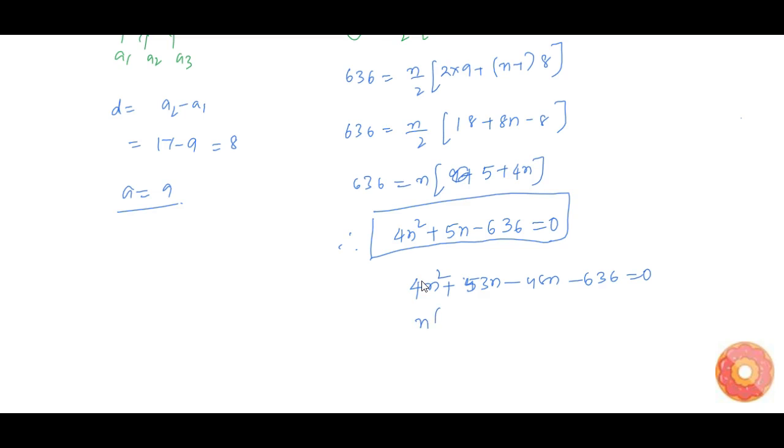Take n common 4n plus 53. Therefore, n is equal to 12 or n is equal to minus 53 by 4.